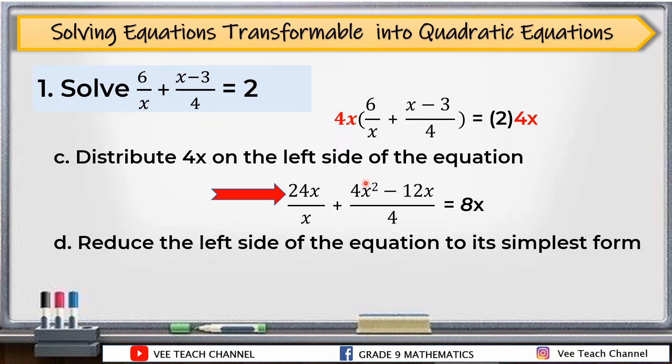After that, reduce the left side of the equation to its simplest form. So, 24x/x is 24. Then 4x²/4 is x². And -12x/4 is -3x. So we have 24 + x² - 3x = 8x.